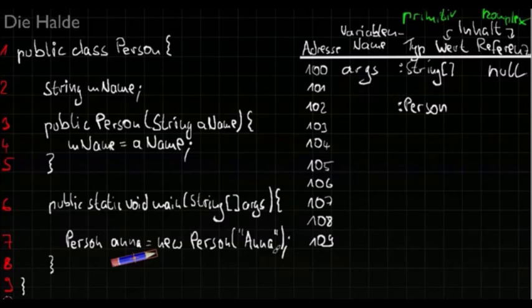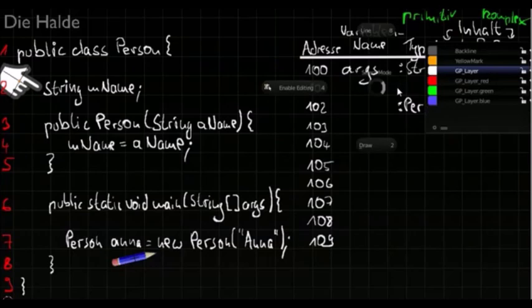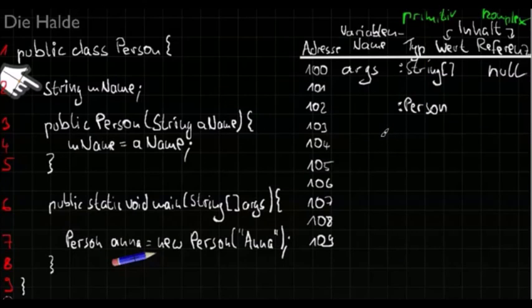The memory will create a new memory cell to save an object of the type person. And member variables of the class person are always up there. And we will always enter the default name and the default content of all member variables. The class person owns the member variable mname. So we take the next free memory cell of the memory to save the variable mname. That has the type string into it.